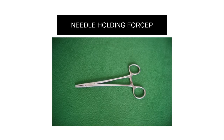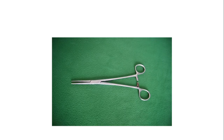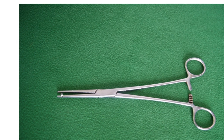This is the needle-holding forceps. You should differentiate it from the artery forceps. The main difference is: when you look at the needle-holding forceps, you can see cross-striations — the lines are in a cross pattern. When you look at the artery forceps, you can see straight striations — the lines run straight. This is the straight artery forceps; if you look here you can see straight lines.